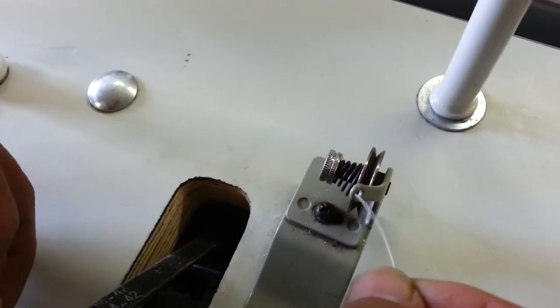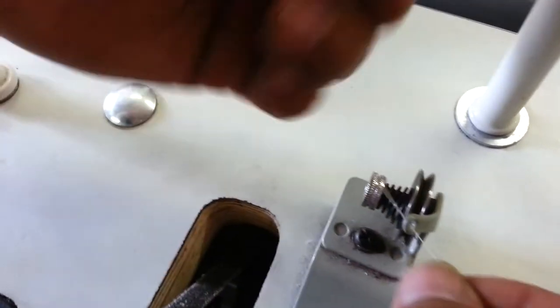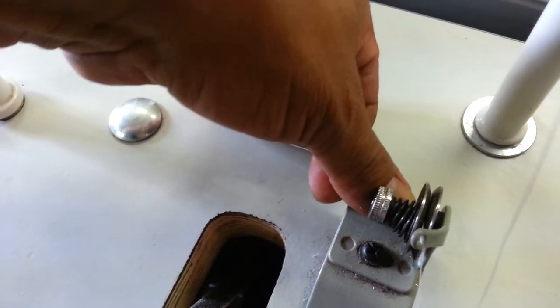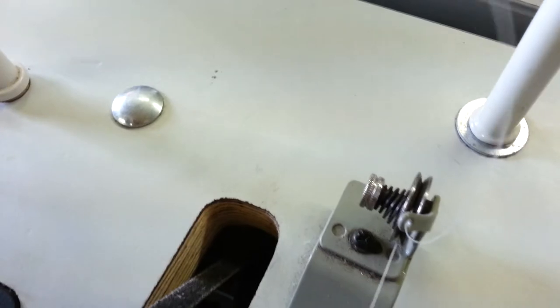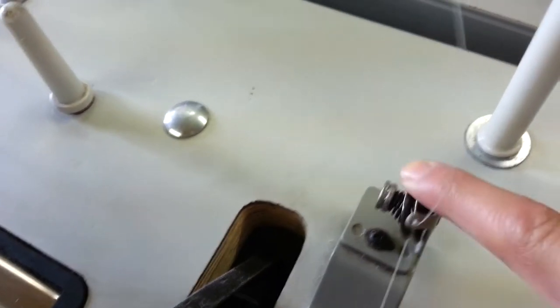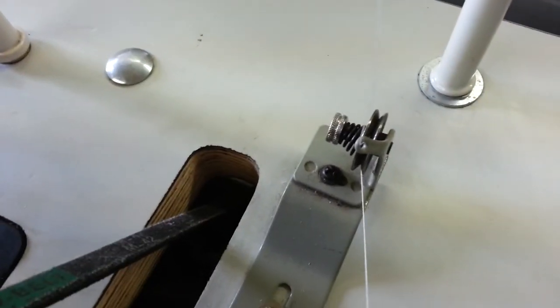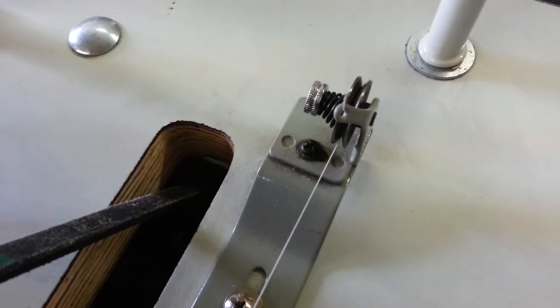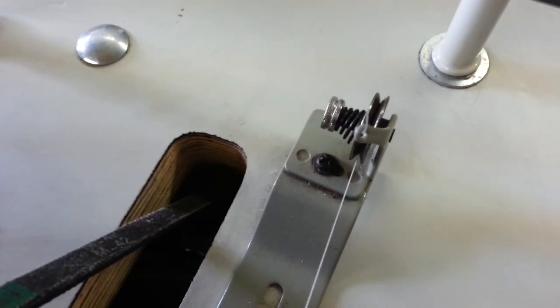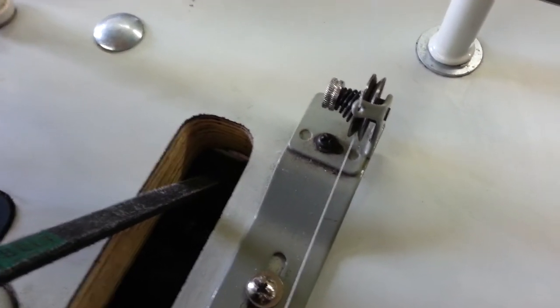So now we're going to make sure that we start threading the bobbin properly. We're going to go through there and then under. And you've got to make sure you get it in between these two discs really good. So if it's not through the discs, just make sure. Because if it's sitting on top of the discs, you're not going to get the proper tension.